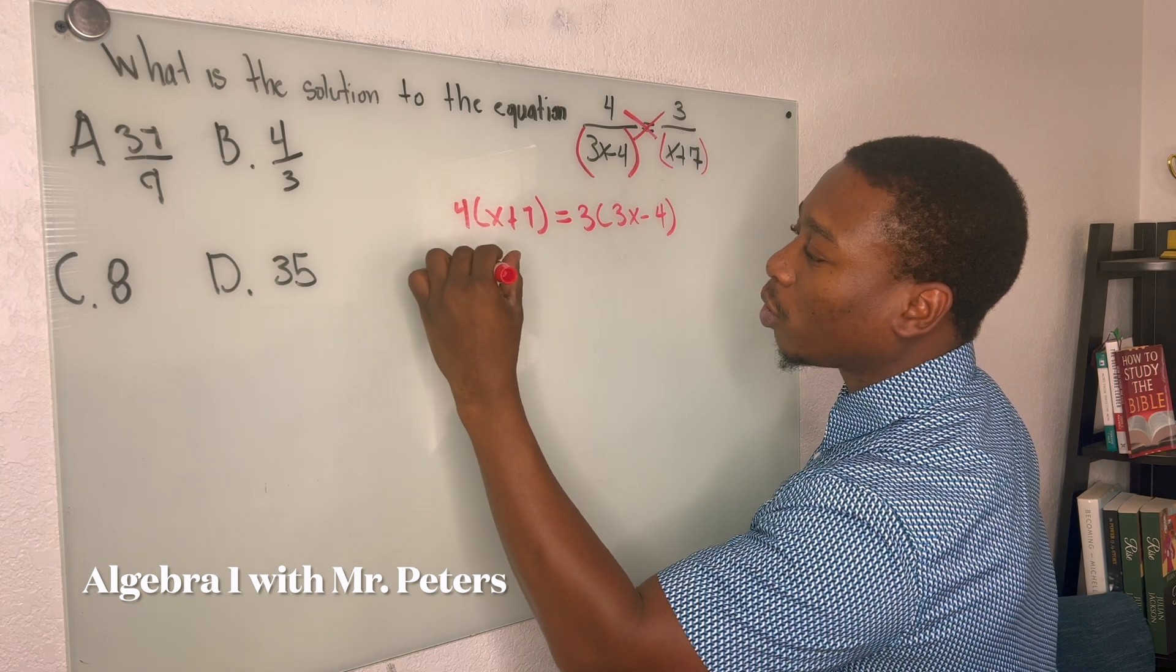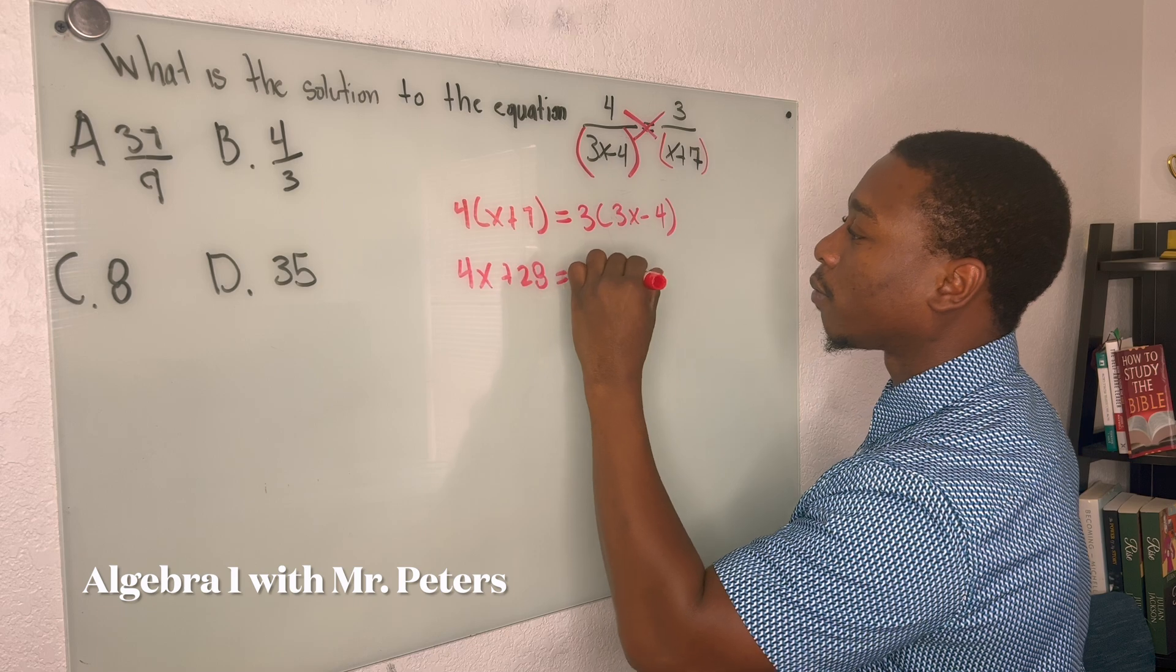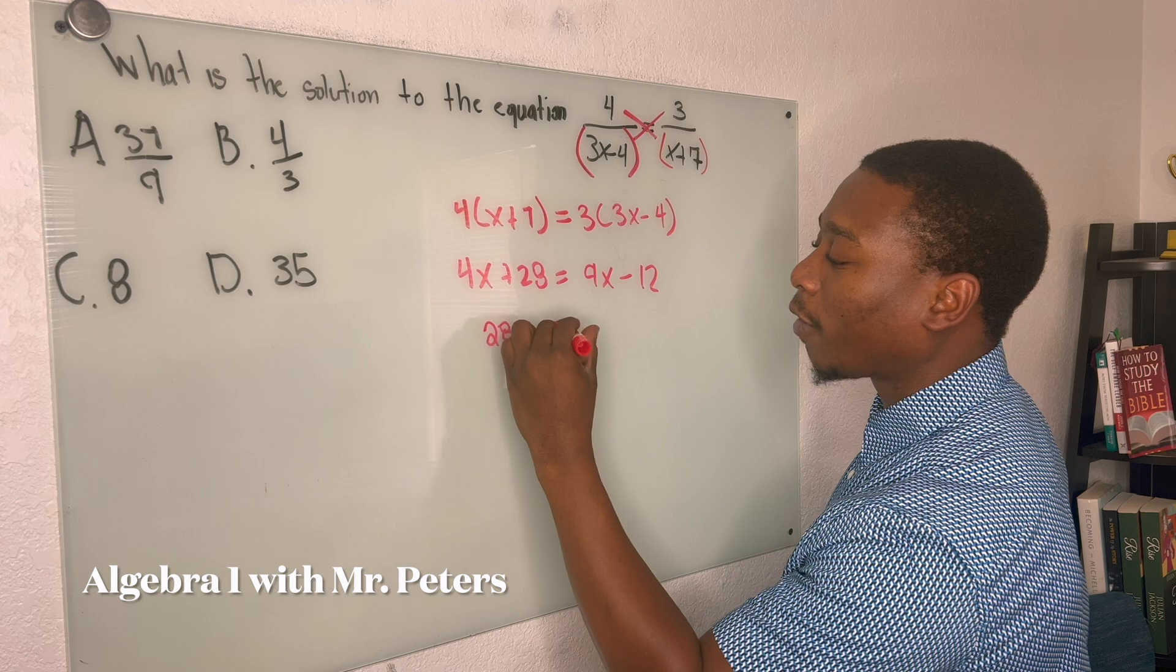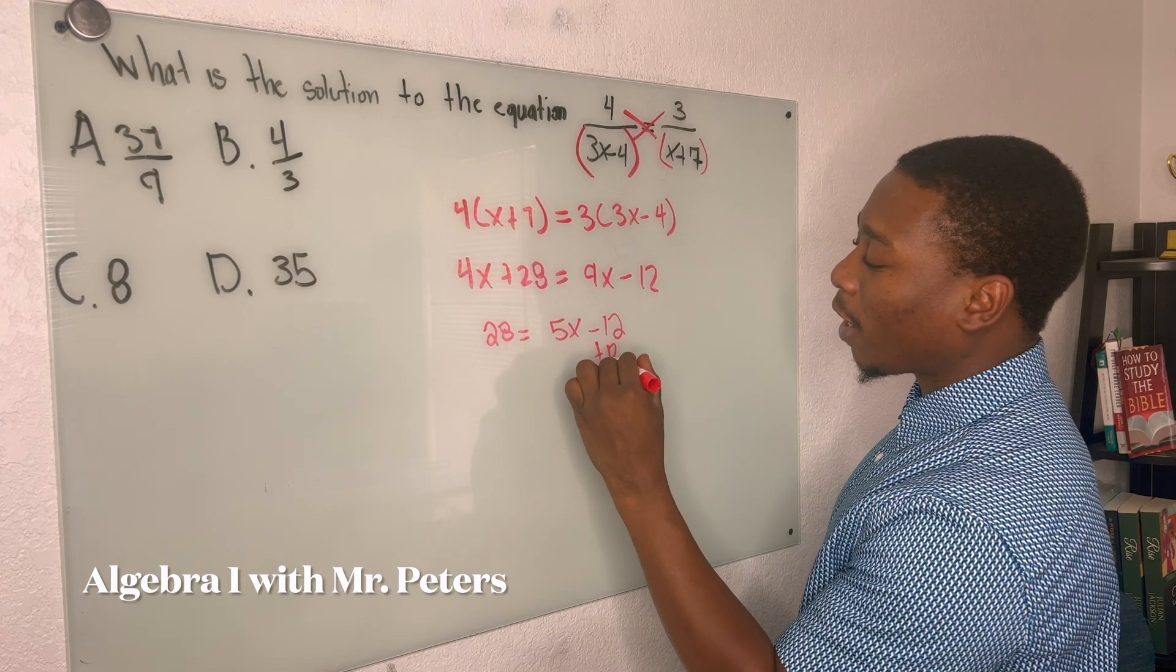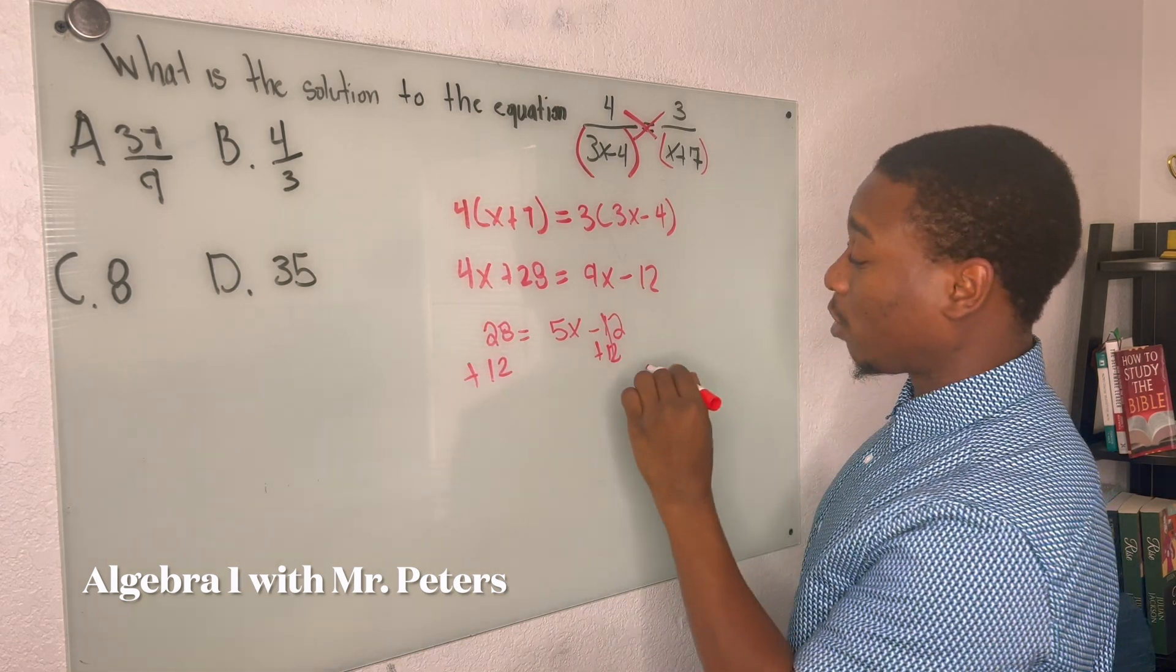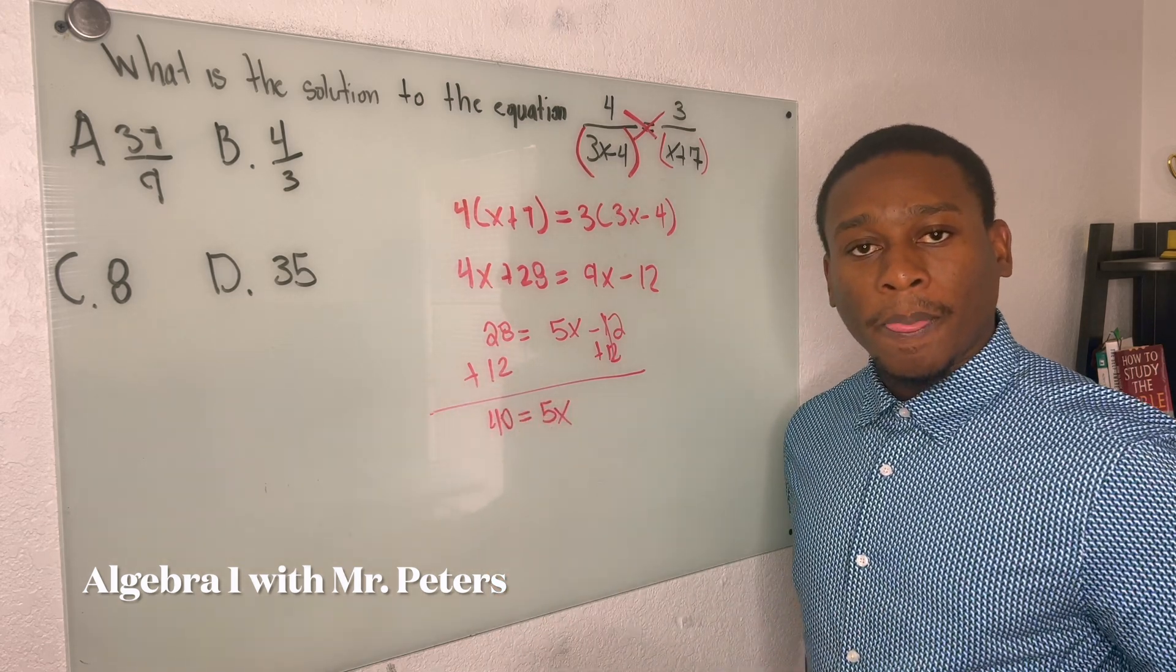So after we distribute, this is what we're going to have. I'm going to combine my x's. So we'll have 28 is equal to 5x minus 12. Combine my x's again by adding 12 on both sides. Sorry, not my x's, my constants. And we're going to get 40 is equal to 5x.